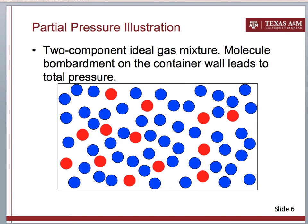Now let's imagine we have a two-component ideal gas mixture. This is the case for moist air. In moist air, we assume that there's the air molecule and there's the water vapor molecule, so it's a two-component ideal gas mixture.